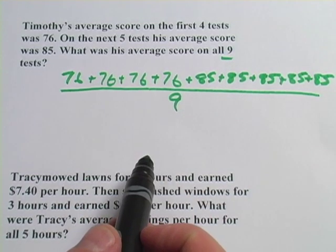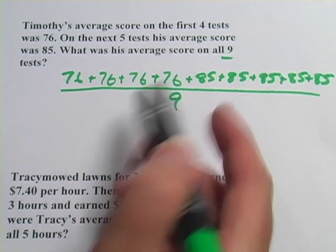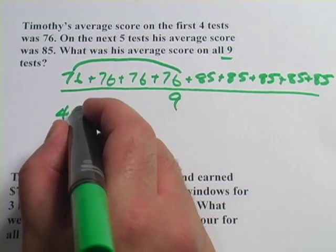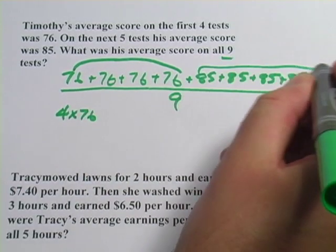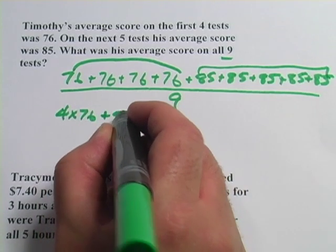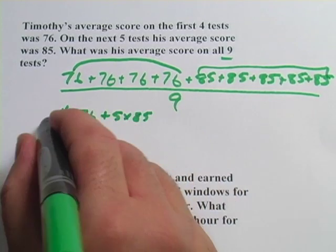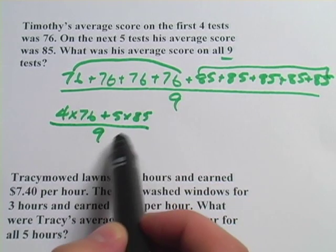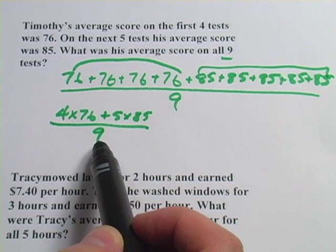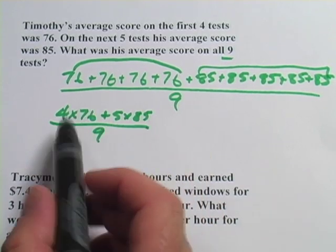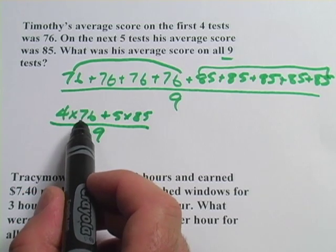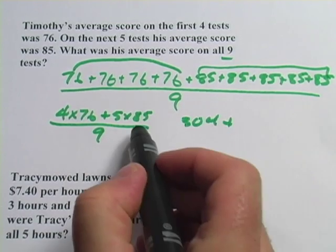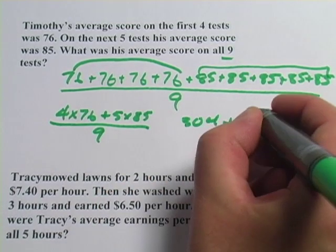I want to show you a little bit of a shortcut, because what you're being given is sort of chunks. This chunk has four 76's, so that's really four times 76. And this chunk, that's five 85's, so that's really five times 85. We'll still divide the whole thing by nine. This is just an easier way to do it — a little less number punching on your calculator. So all I have to do is multiply four times 76, and that's 304.